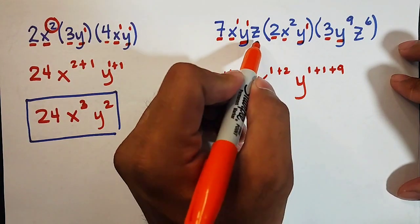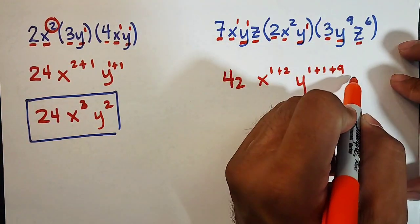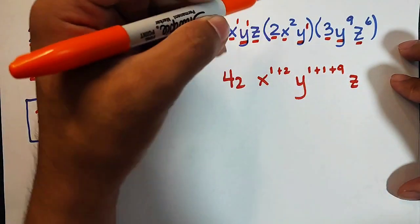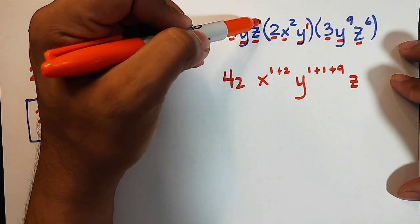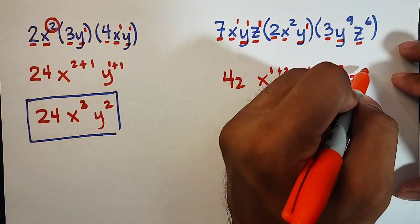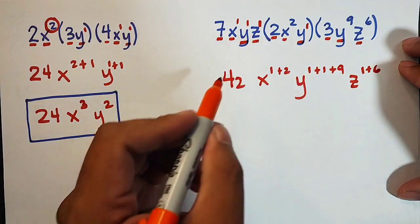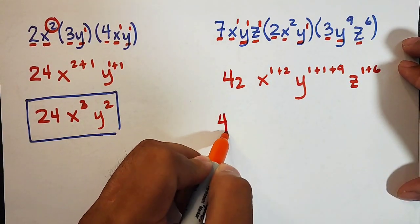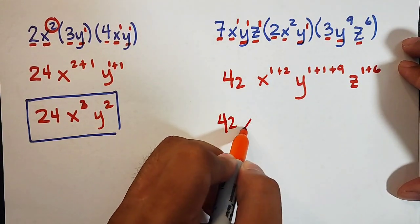And for the variable z, copy the variable z. Add exponents. We have here 1 and 6. 1 plus 6. Simplify this one. 42x cubed.